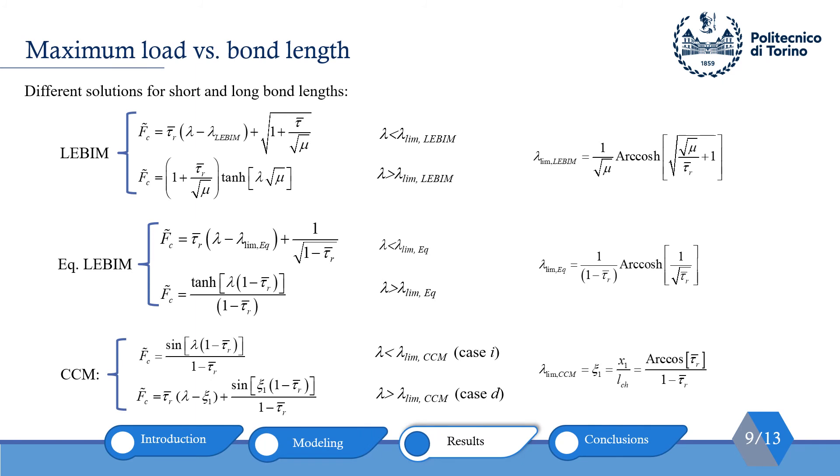After evaluating the stress distribution during debonding, we can determine the maximum load of debonding for different bond lengths. As the maximum load is usually the most important parameter. Maximum load for LEBIM and equivalent LEBIM can be calculated using the first derivative of the load with respect to the debonded lengths or lambda. During the calculations, we need to divide the solution for large and short bond lengths according to lambda_limit.